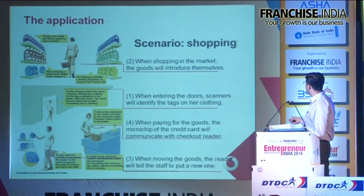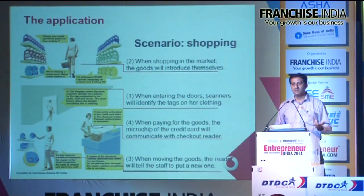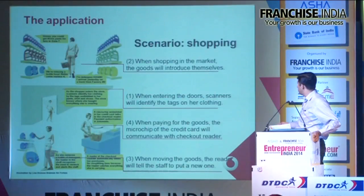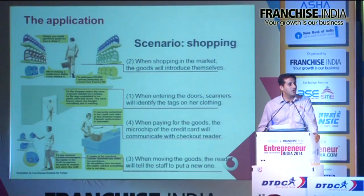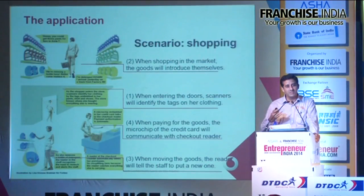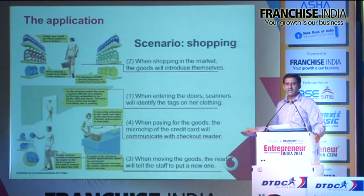Second situation: when shopping in the market, goods will introduce themselves - if there's a new product, automatically the information will flow and the person will go to that particular shelf to buy it. Situation three: when moving goods, the reader will tell staff to put more of those goods on the shop floor. When paying for goods, the microchip of the credit card communicates with the checkout reader automatically - there's no human intervention required. I'm sure a lot of people here would be amused - this sounds very futuristic, maybe 50 or 100 years away or something you'd only see in movies. But I would share a real example in the next slide.